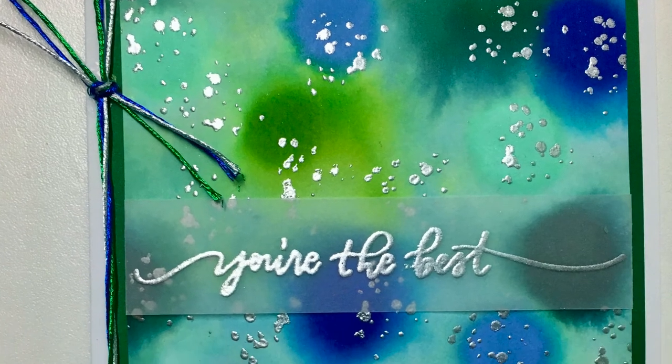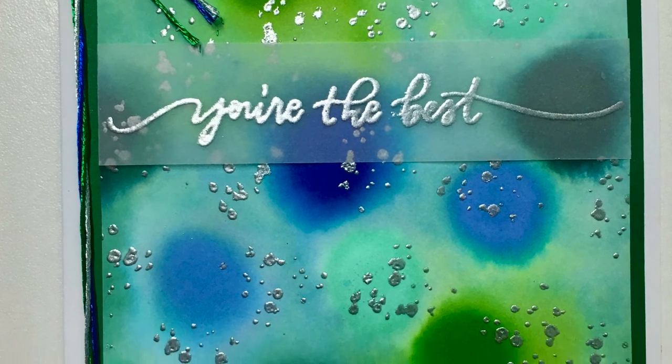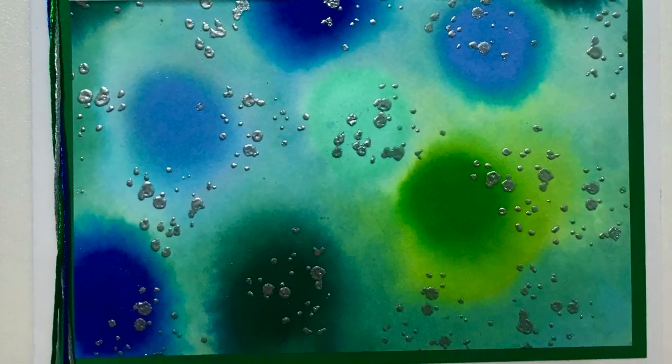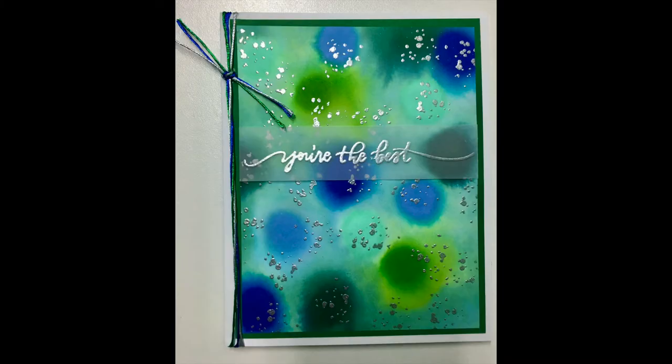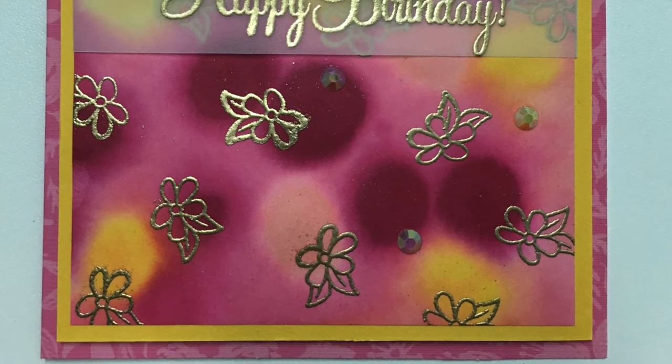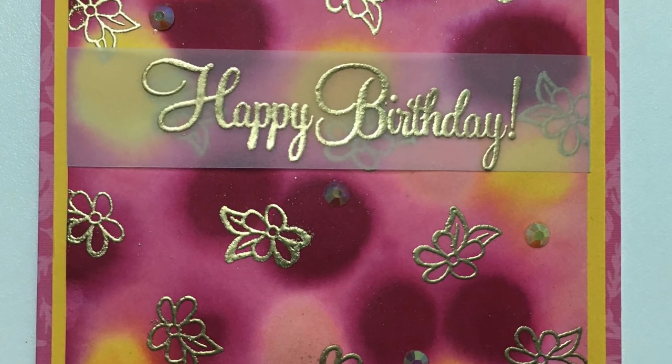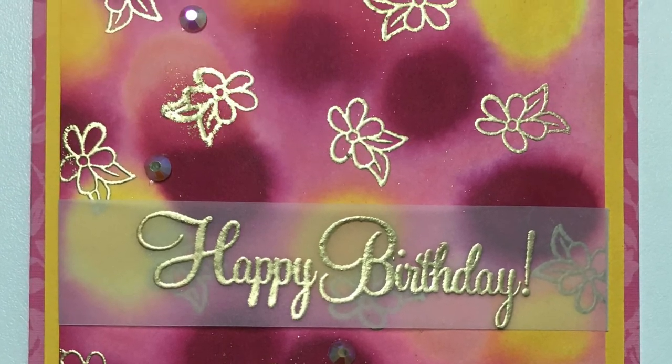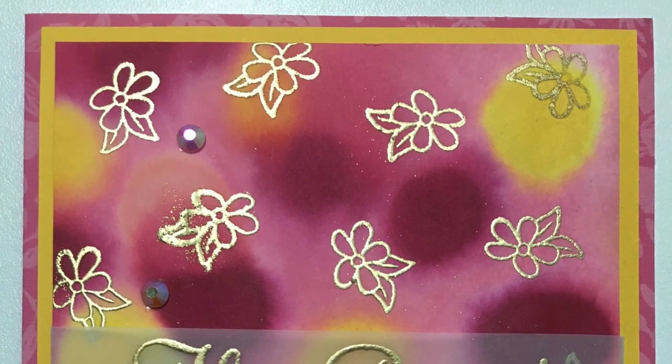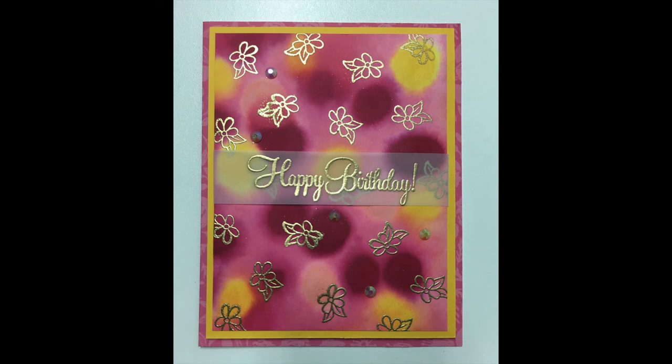Here's one I did, same technique using re-inkers. This one I used some silver heat embossing for the speckles and some vellum to put the sentiment on. Again same technique, some different color re-inkers with some gold embossing and some crystals.